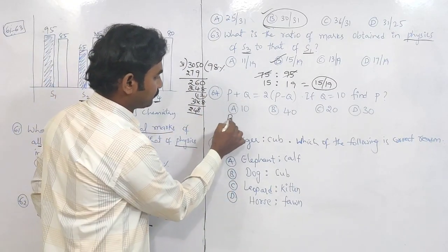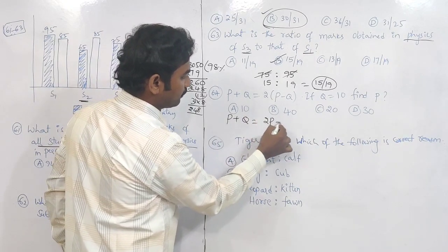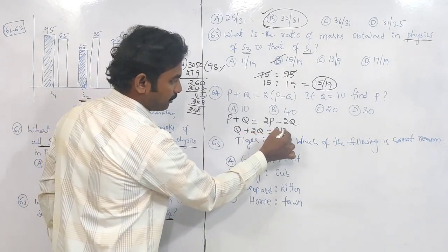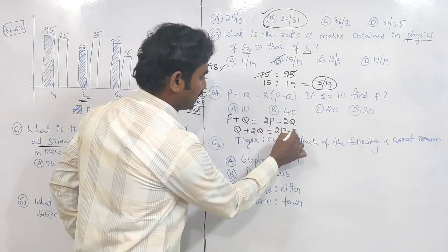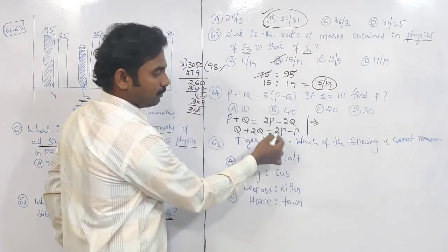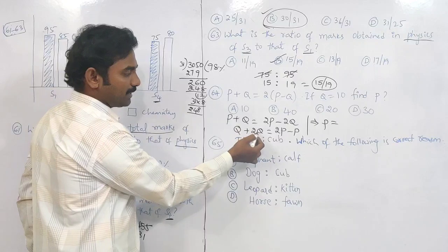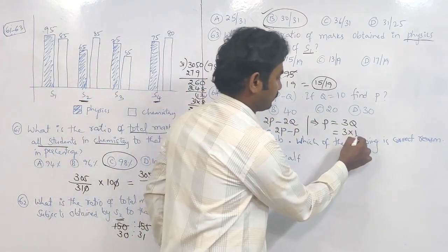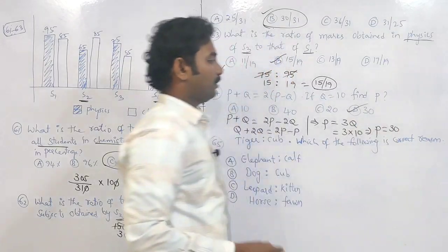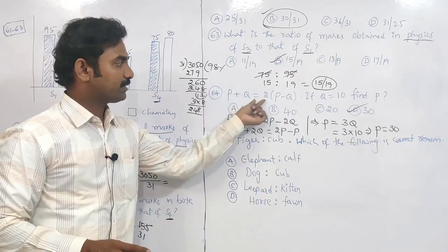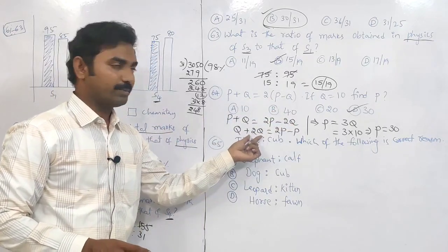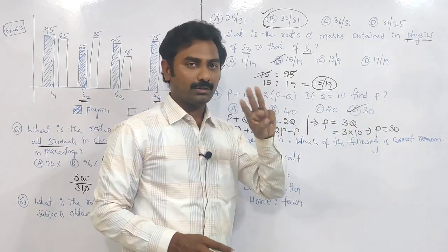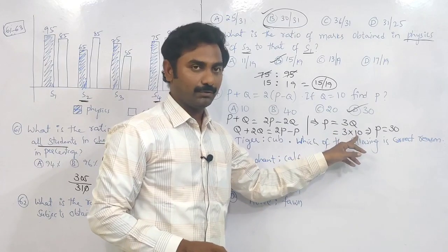Question 64: P + Q = 2P − 2Q. Moving terms: −2Q becomes +2Q on the left, and +P becomes −P on the right. So: Q + 2Q = 2P − P, meaning 3Q = P. The value of Q is given as 10, so P = 3 × 10 = 30. Option D is right. Very simple: P + Q = 2P − 2Q gives P = 3Q; substituting Q = 10 gives P = 30.